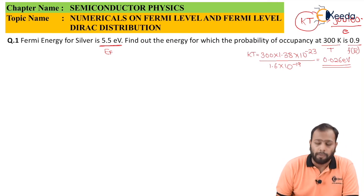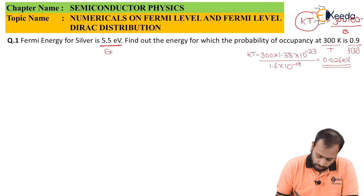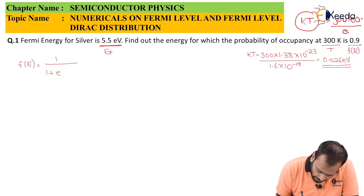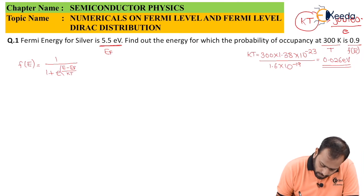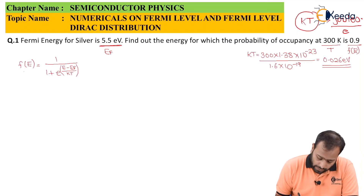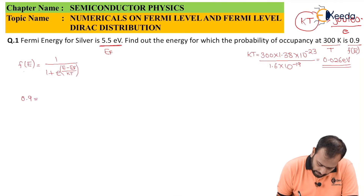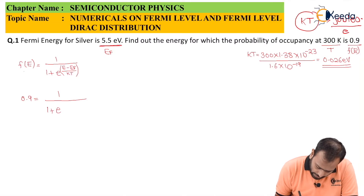Let's recall the formula for probability of occupancy, the Fermi-Dirac distribution function: F(E) = 1 / (1 + e^((E − EF)/KT)). We are given F(E) and EF, and we have already found KT. The only value left to find is E. Plugging in the values: 0.9 = 1 / (1 + e^((E − 5.5)/0.026)).